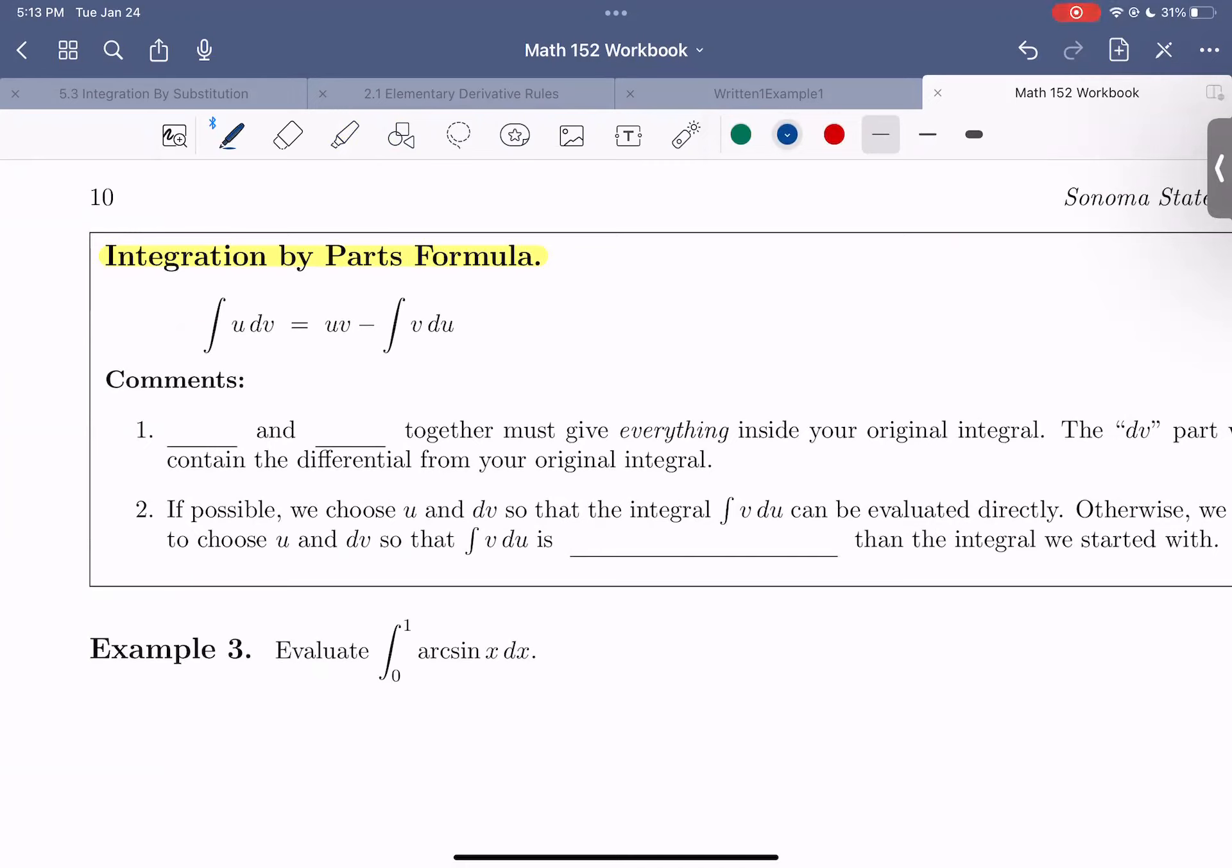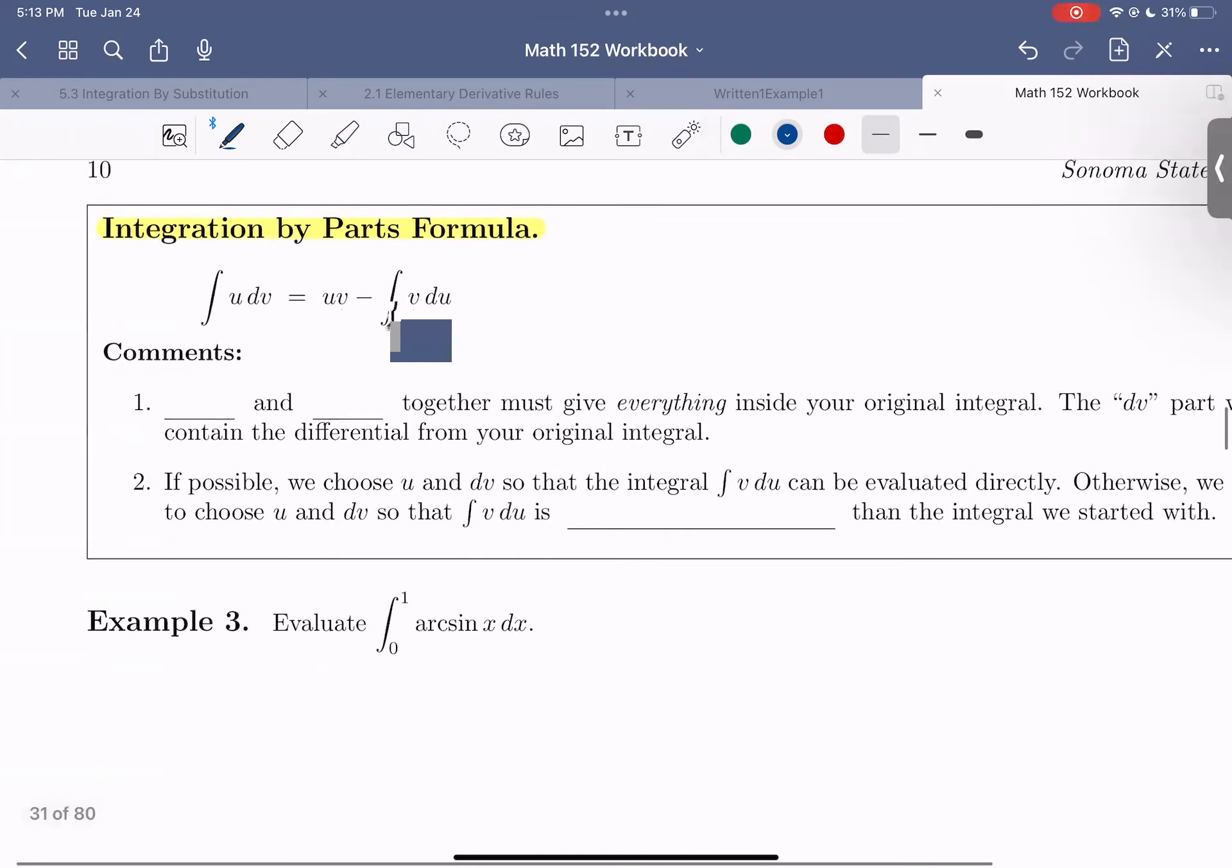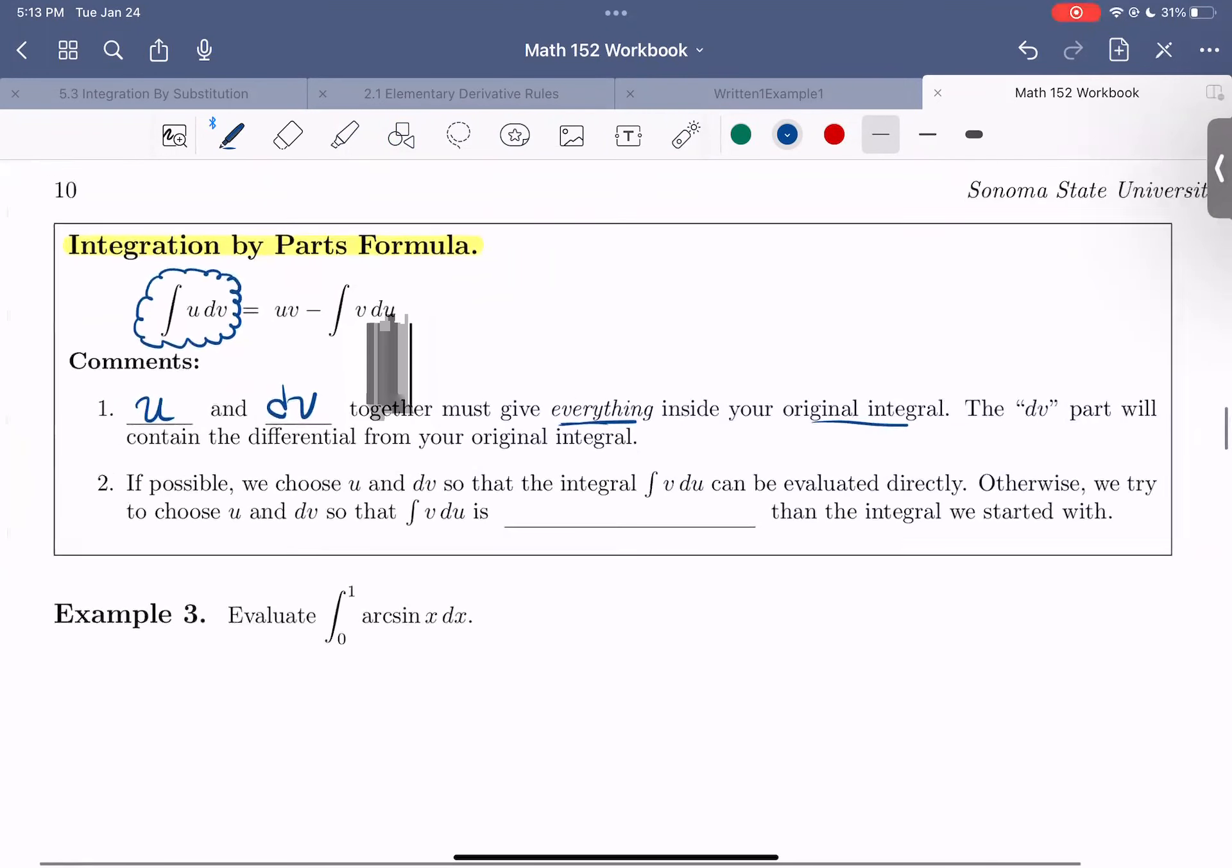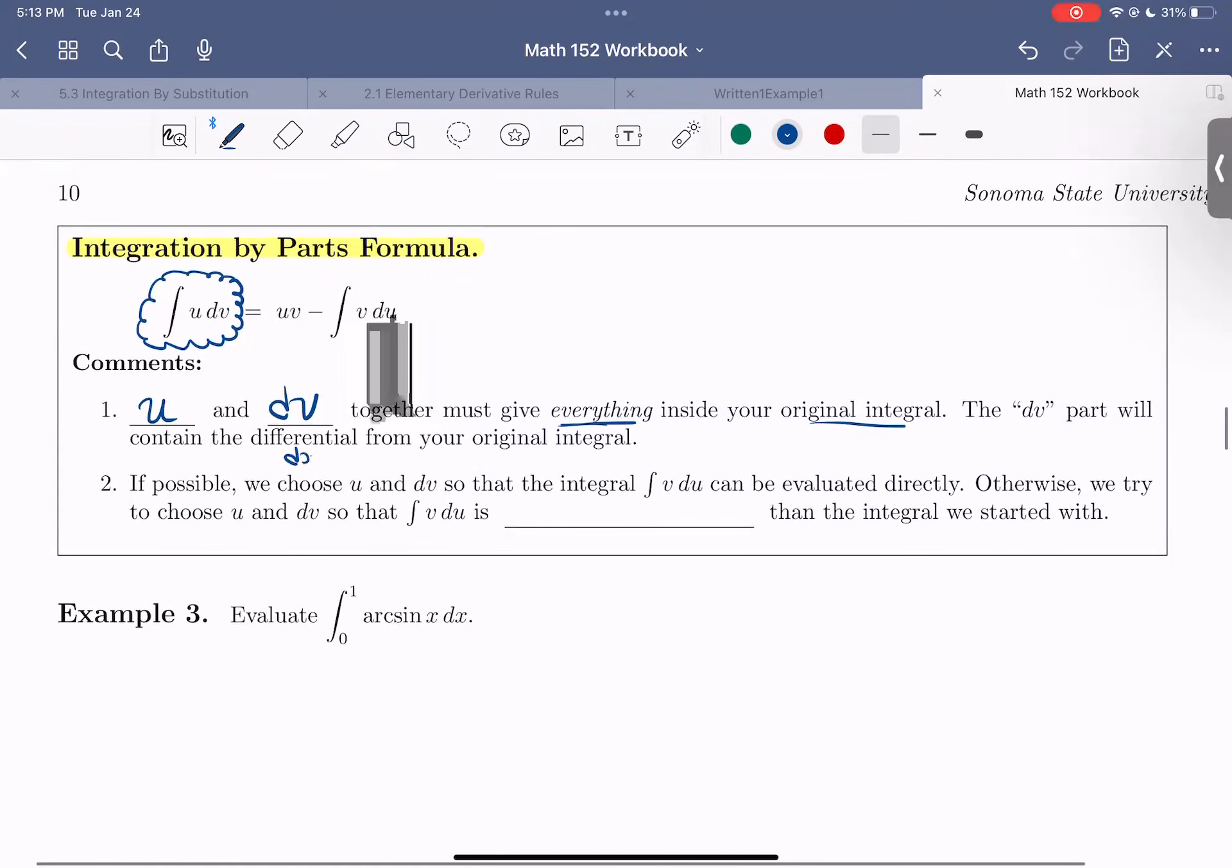And so just some comments. When you're computing an integration using the by-parts formula, you need your u and your dv to together must give everything inside your original integral. You want your original integral to just be able to be written exactly as the integral of u dv. Otherwise, this formula doesn't hold. And recall that dv part will contain the differential, meaning the dx from the original integral.